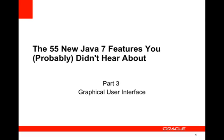Welcome to the third edition of '55 New Things' — Java 7 features you probably didn't hear about. In this edition we'll deal with eight new features related to graphical user interfaces that occurred in JDK and Java 7, some things that possibly you did or did not hear about.